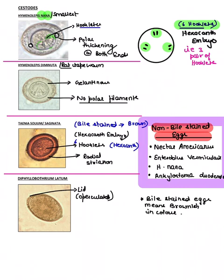Coming to Taenia solium and Taenia saginata — like other cestodes, they have a hexacanth embryo. What's important here is that both 'solium' and 'saginata' start with 'S', and this represents the presence of radial striation. You can see the radial striation present in the image, along with the hexacanth embryo.